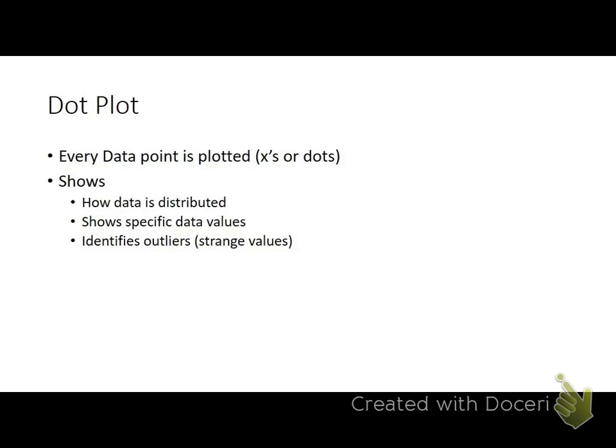Now, dot plots are kind of the same deal where they are kind of like histograms in that they'll show the shape and some other characteristics of a distribution. But you'll see the actual data points instead of just bars to represent a bunch of data points. So in a dot plot, it's called a dot plot because a lot of times we'll show the data as a dot instead of the actual number. Like a stem and leaf plot, we'll show it as a dot. Or X's. Sometimes we do X's. And again, it shows how the data is distributed. It does show the specific data values. And the stem and leaf plots as well are pretty good ways to identify some outliers, which we'll talk about a little bit later, which are just kind of some strange values.